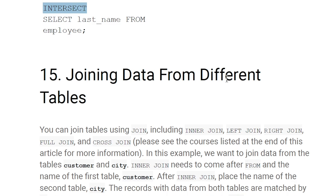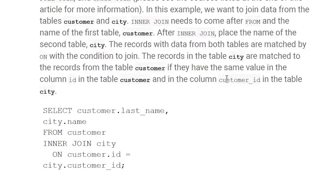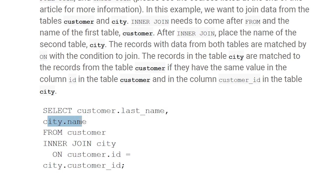Joining data from different tables: you can use INNER JOIN, LEFT JOIN, RIGHT JOIN, FULL OUTER JOIN, or CROSS JOIN. For example, SELECT customer.last_name, city.name FROM customer INNER JOIN city ct ON customer.id = ct.customer_id — this joins the last_name and city name columns from the customer and city tables, returning only the common matching entries.